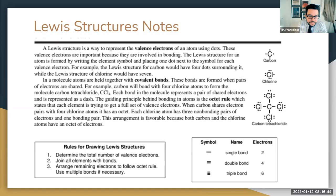The three-step process is: first, figure out the total number of valence electrons; second, join all of the atoms together with bonds; and third, arrange electrons using the octet rule. This is a process and it's going to take some practice to get the hang of it.